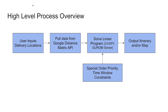Here is a higher-level process overview. First, we take the inputs — all the locations — and pull data from the Google Distance Matrix API to get exact travel times. Then, through our linear program and our priority and time window constraints, we create an output itinerary and map of our route.